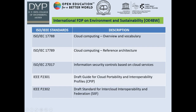Let us go through several ISO IEEE standards. ISO IEEE 17788 gives a brief overview of cloud computing, providing basic terminologies and different cloud service categories such as infrastructure as a service, platform as a service, software as a service, and the recent version also includes network as a service. ISO IEEE 17789 is the reference architecture of cloud computing, containing diagrams and descriptions of how various aspects relate to one another. We also have 27017, which is based on information security controls, and two IEEE formats for cloud portability and interoperability.